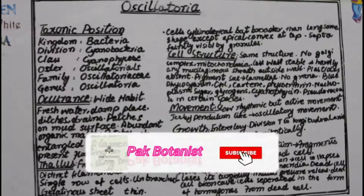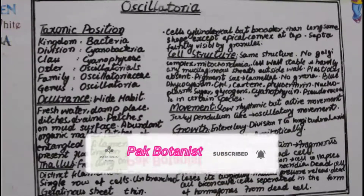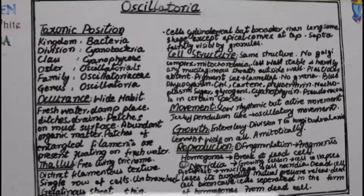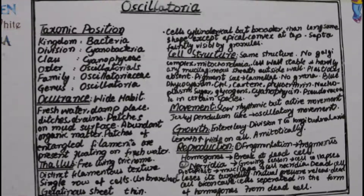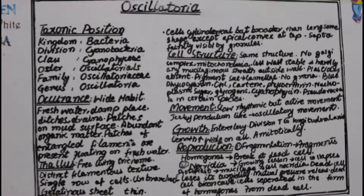Assalamu alaikum viewers, hope for the best of your health. Today's topic is Oscillatoria. We are going to discuss what is Oscillatoria — it is a genus of cyanobacteria and is the most important genus of cyanobacteria.